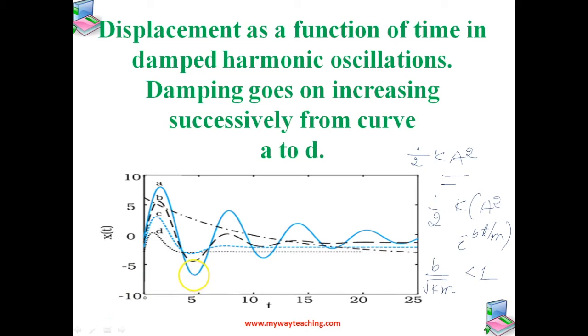If you put B equals zero, all equations of the damped oscillator reduce to the corresponding equations of the undamped oscillator.